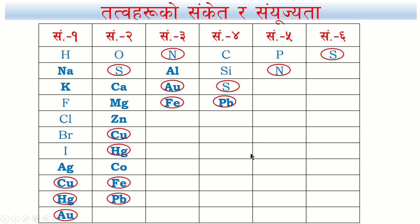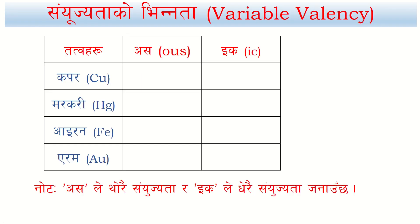For variable valency: copper can be 1 or 2. Normally copper valency is 2. Copper with valency 1 is called cuprous. The cuprous chloride has copper with valency 1. Copper with valency 2 is cupric.